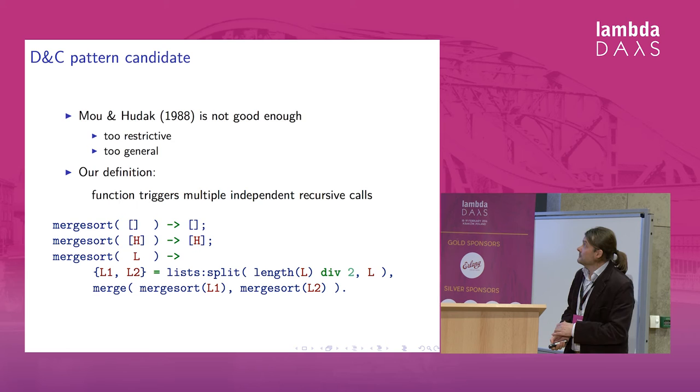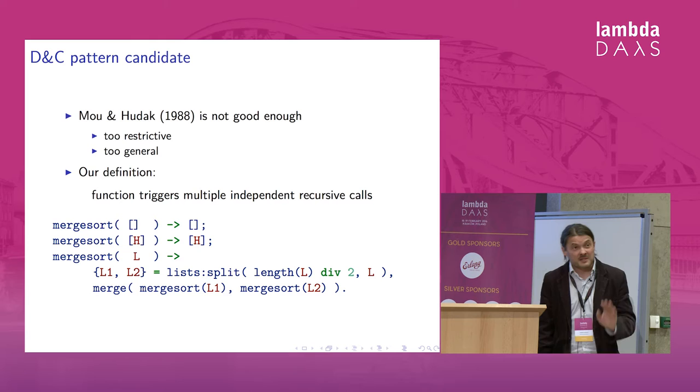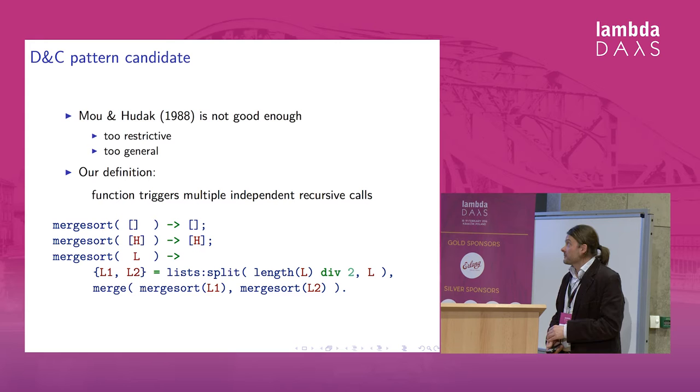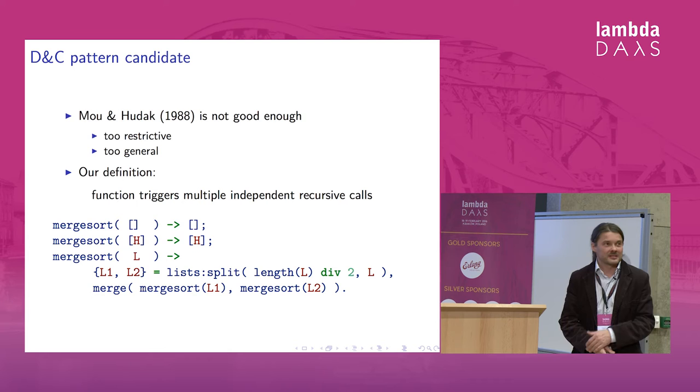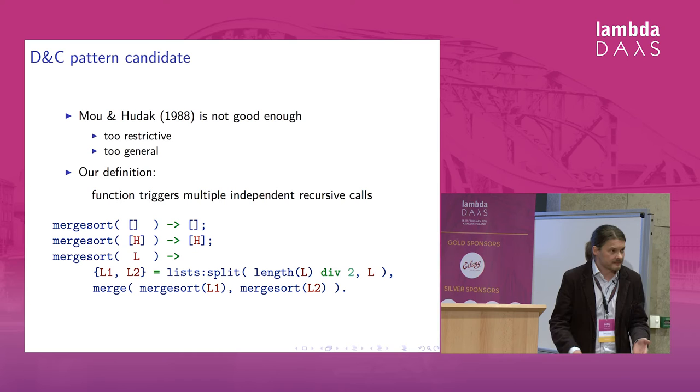So we have seen a definition from that old paper which turns out to be not really good for our purposes. In some sense it's too restrictive, and in other senses it's just too general. So we have a very stupid own definition. A function implements divide and conquer algorithm if it triggers multiple independent recursive calls.